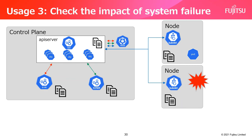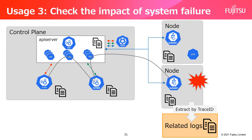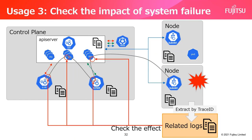The third example is when we find a system failure — for example, a node problem — and we want to see what happens as a result. First, we notice that a node problem occurs and we get the trace ID from the relevant log. Then we extract the related logs by trace ID. We can extract the logs of the processes that were triggered by the problem of this node. By analyzing this log, we can see which components dealt with this failure and see further the extent of impact caused by this node problem.